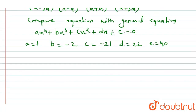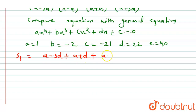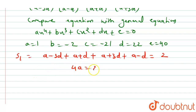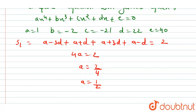We know that S1 is the sum of roots: (a - 3d) + (a - d) + (a + d) + (a + 3d) = -b/a = 2. Solving this gives 4a = 2, so a = 1/2.